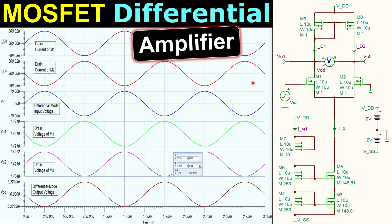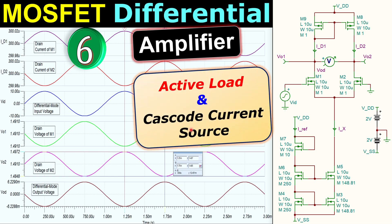Greetings and welcome to a new video about MOSFET differential amplifiers. This is example number six, where we will discuss the more advanced variation of our MOSFET differential amplifier featuring both an active load and a cascode current source together. This circuit will be without any resistors.